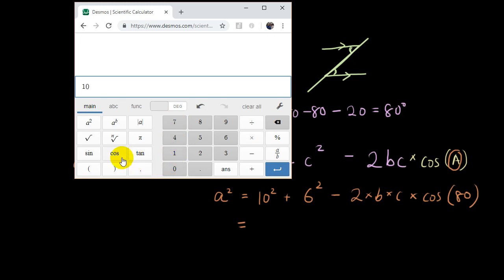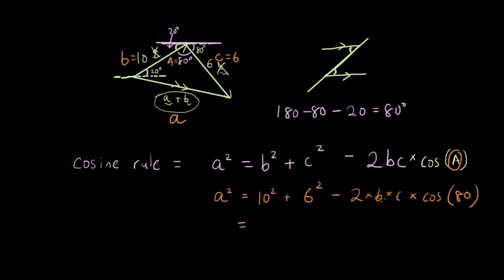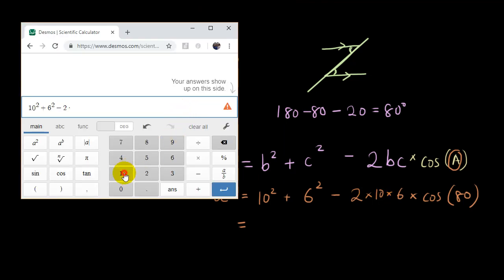So you're just going to go 10 squared, or is it squared button, plus 6 squared minus 2 times. I forgot to substitute the values in. So it should be 2 times 10 times 6. Let me just fix that right now. 2 times 10 times 6 times cosine of 80 degrees. Cosine of 80 degrees. And just press enter. And you can see the answer is 115.1622187.